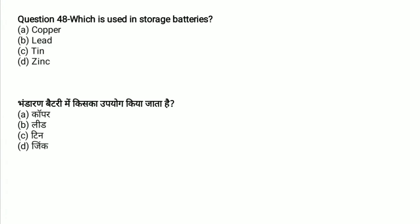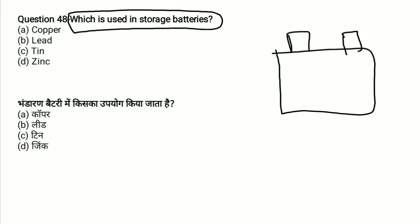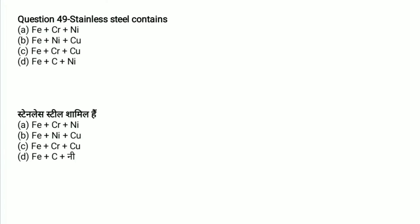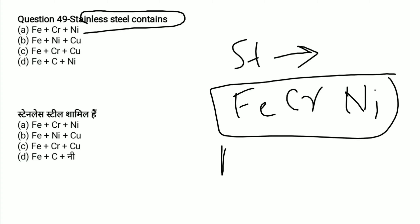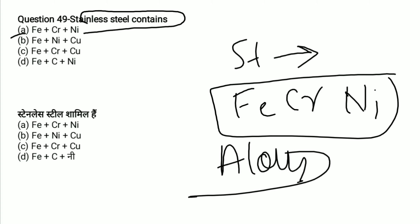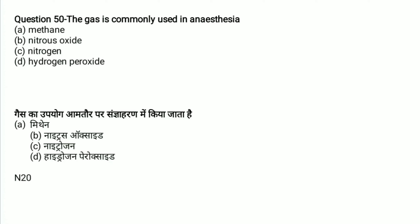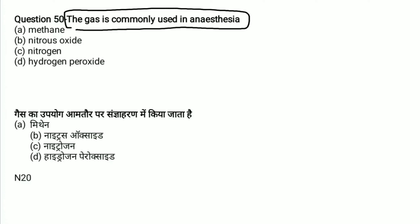Which material is used in a storage battery? Lead is used in storage batteries. The gas commonly used in anesthesia is nitrous oxide.